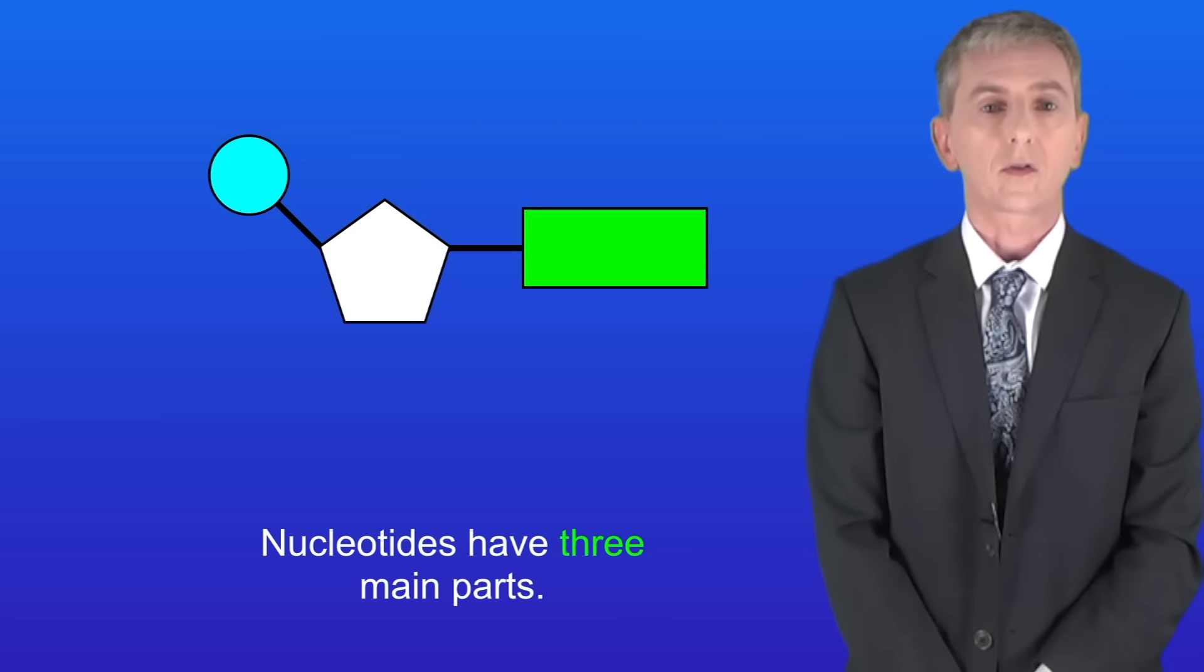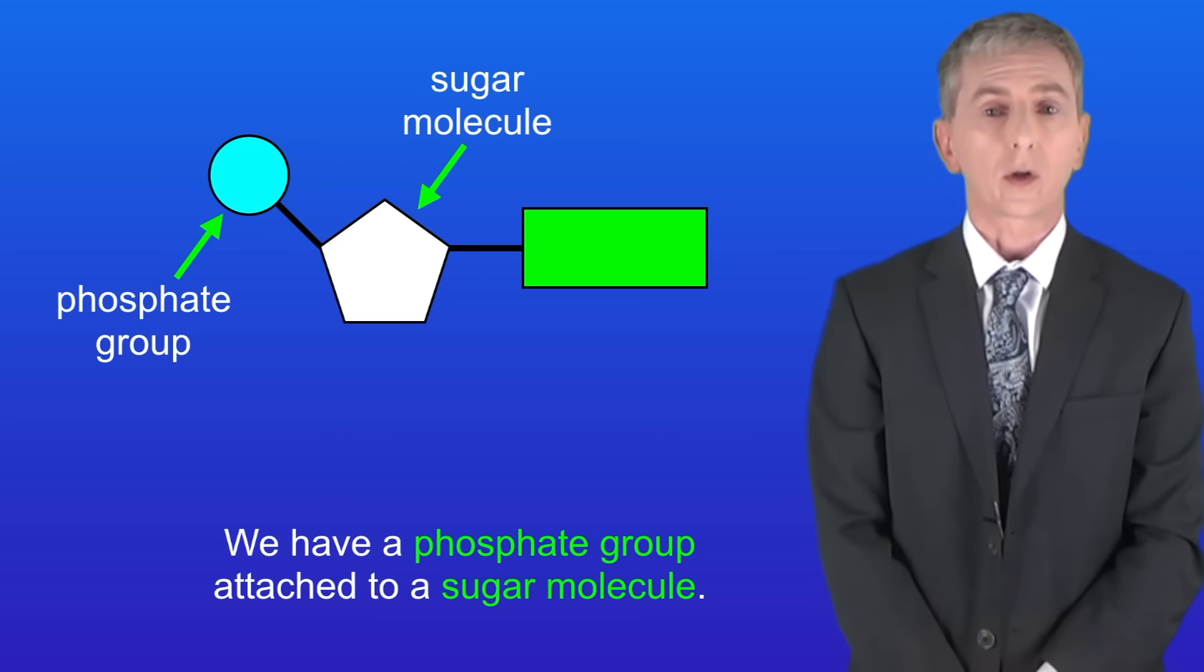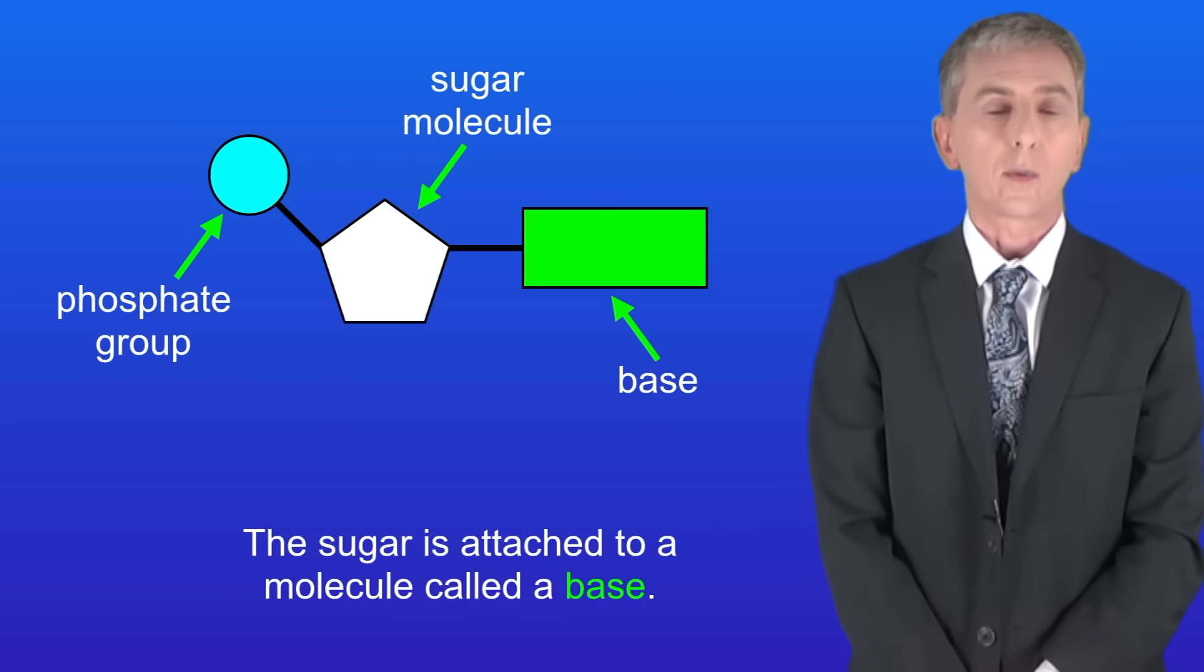Nucleotides have got three main parts. We've got a phosphate group attached to a sugar molecule. The sugar is attached to a molecule called a base.